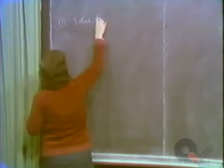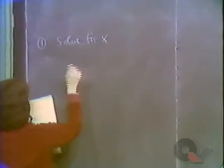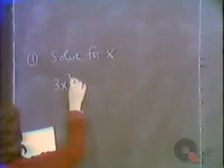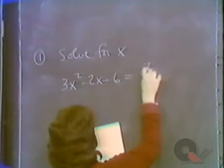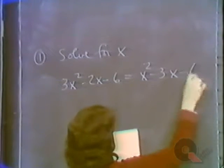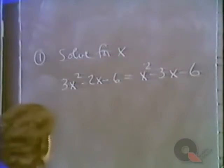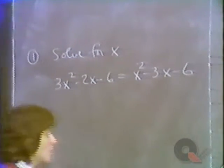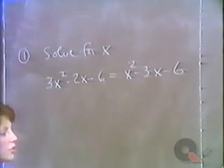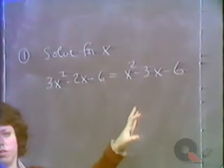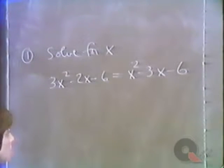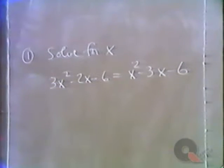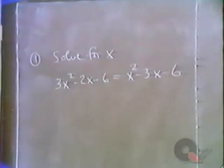In the first example we want to solve for x: 3x squared minus 2x minus 6 equals x squared minus 3x minus 6. To solve a quadratic equation, the best thing to do is to try to get all the terms on one side equal to zero. This is our standard form for a quadratic equation, and we'll then either factor, complete the square, or use the quadratic formula.